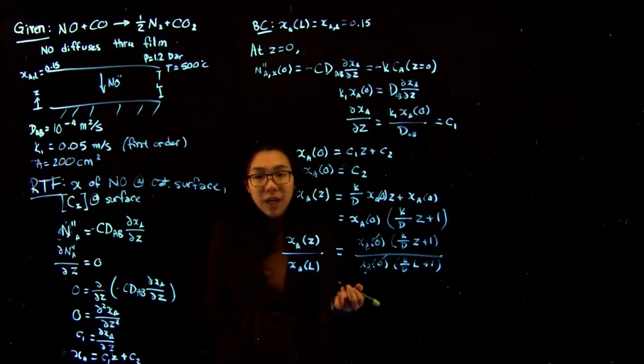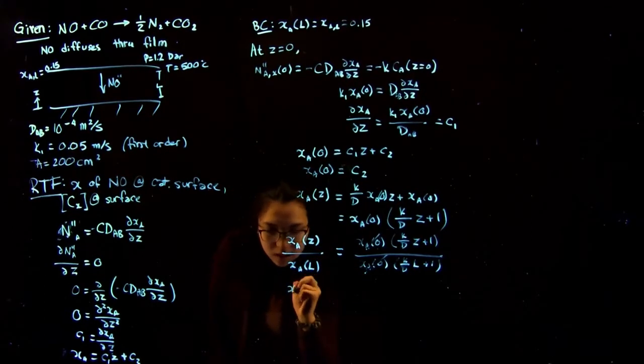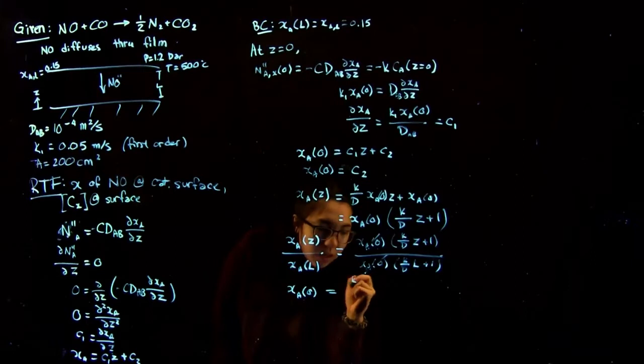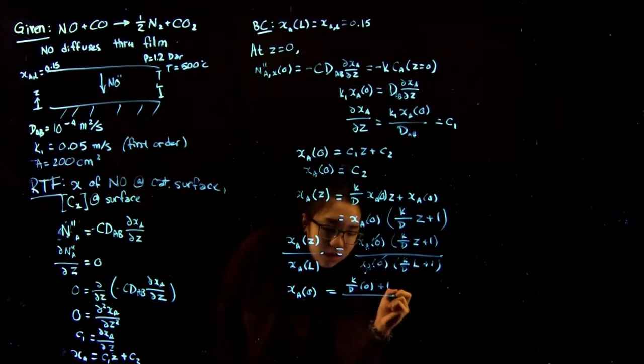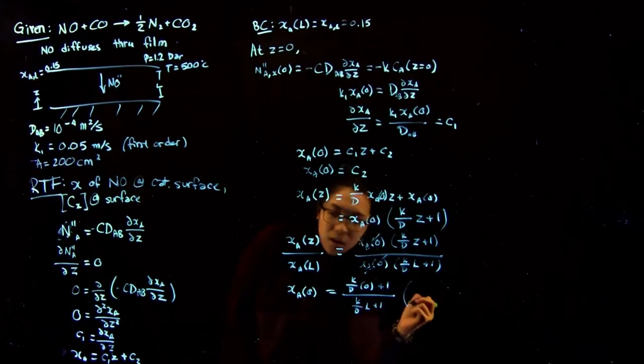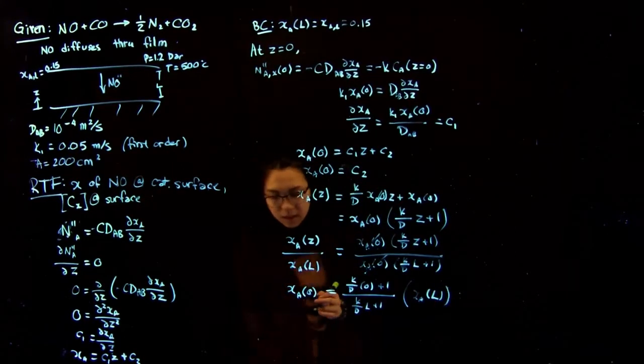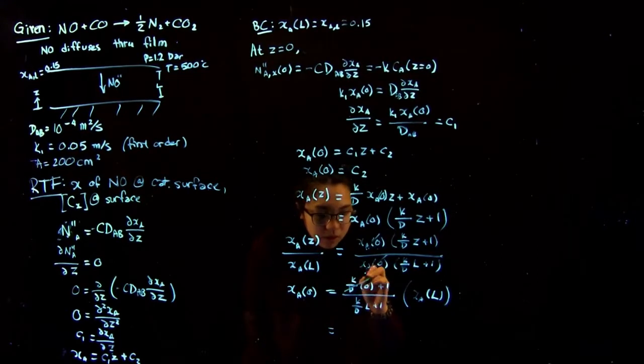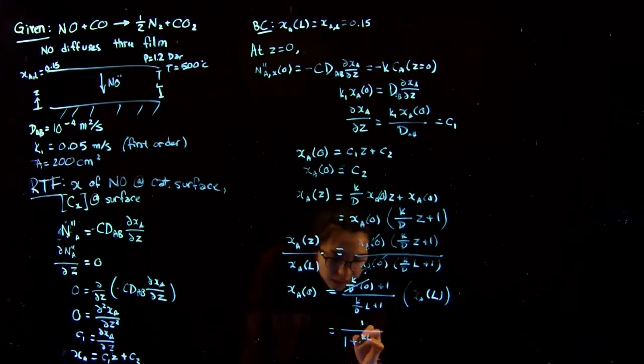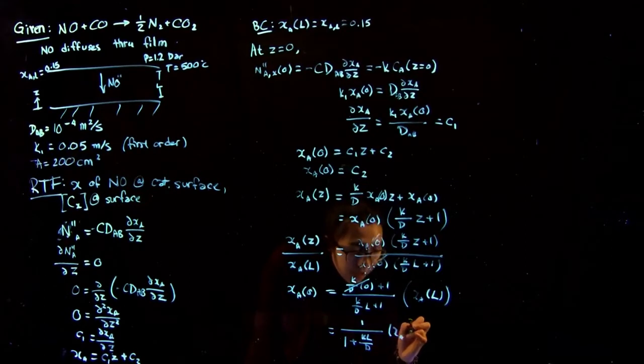So what we want to do is solve for the value for the mole fraction at Z equals zero. That's what the question is asking. So we get that XA at zero is going to equal K over D times zero plus one over K over D L plus one, all multiplied by XA at position L. So this term goes to zero. That just becomes one over one plus K over D times XA at L.